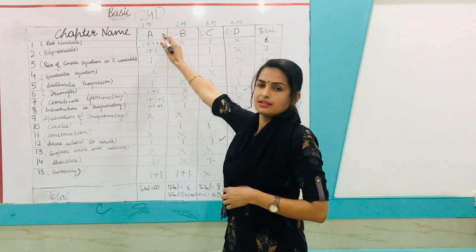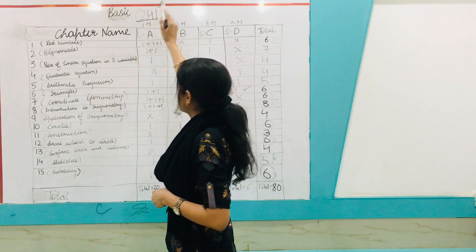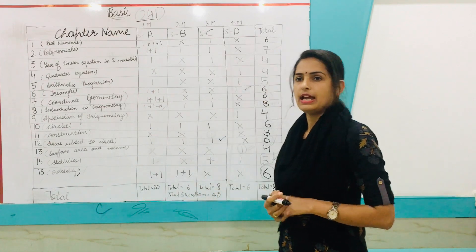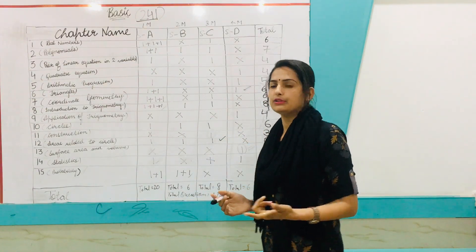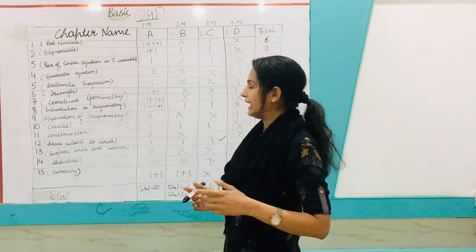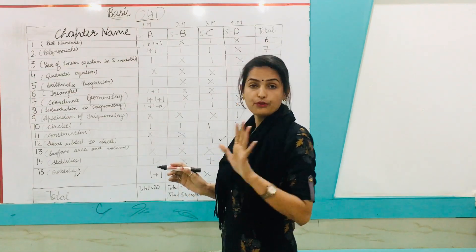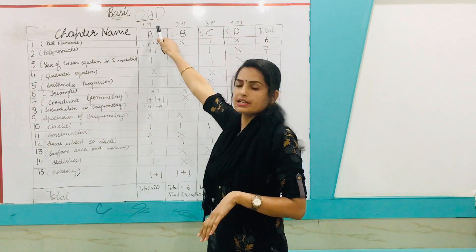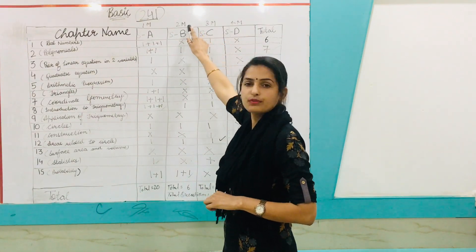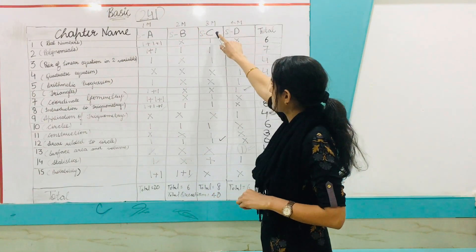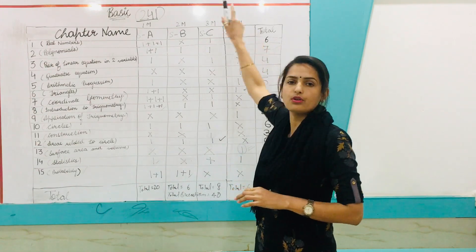For the basic part of mathematics, the course code is 241. The pattern of the question paper has a total of 40 questions divided into four sections. Section A consists of 1-mark questions, Section B has 2-mark questions, Section C has 3-mark questions, and Section D has 4-mark questions.